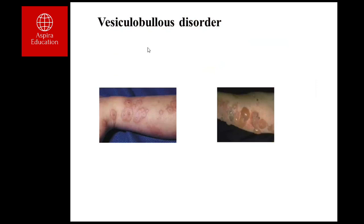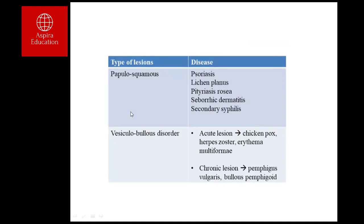The second group is vesiculobullous disorders. Here you will find either a vesicle or a bulla. In some cases, the bulla or vesicle has ruptured, so you may find erosions instead of intact blisters.